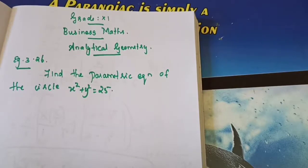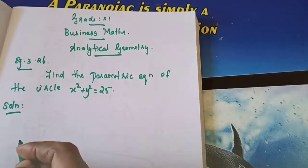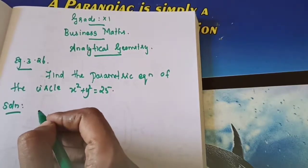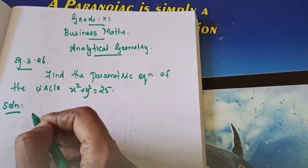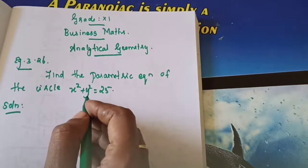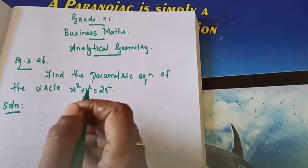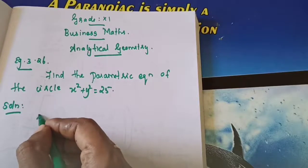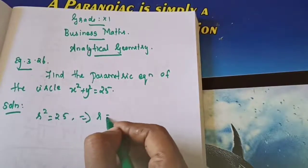x squared plus y squared is equal to 25. So very simple question. From that you need to find the r value first. The parametric equation I taught you: cos theta equals x by r, that is x equals r cos theta, y equals r sin theta. So we need the r value. The form is x squared plus y squared equals r squared. From that, r squared equals 25, so r equals 5.